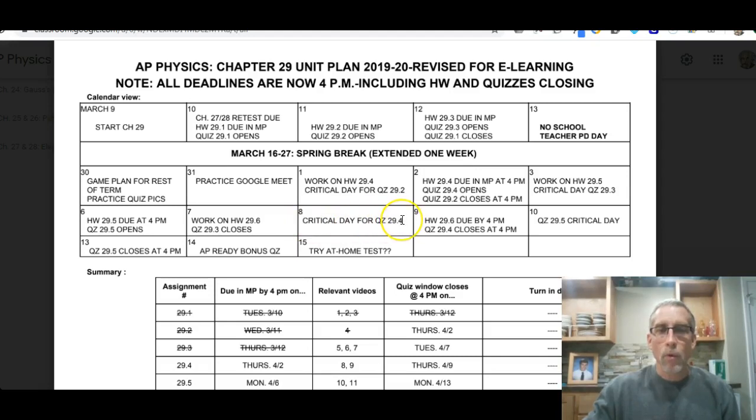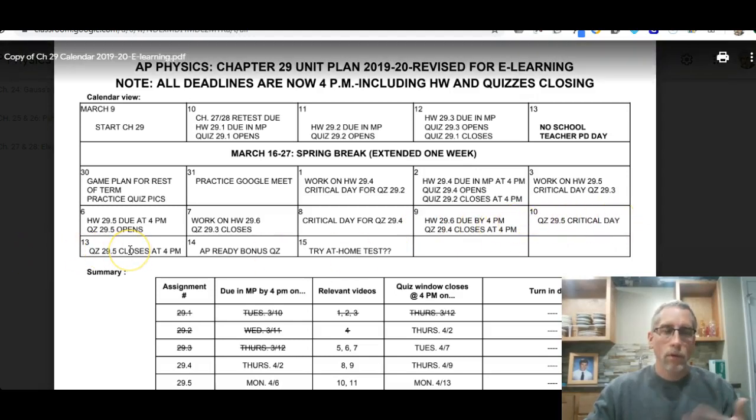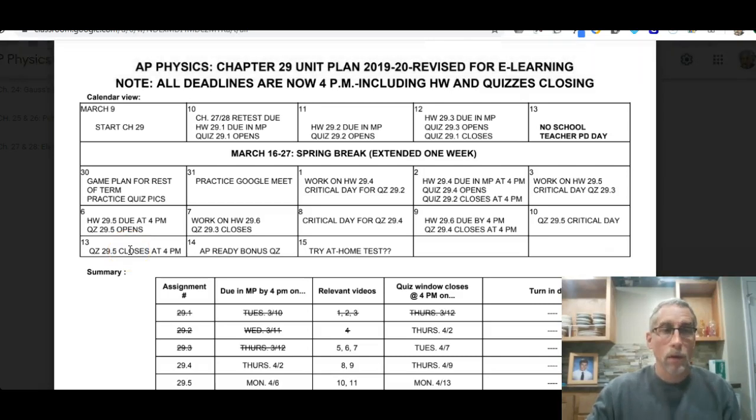29.4 we opened last week and that's critical day is Wednesday. And then we're closing that one on Thursday. And then critical day for quiz 5 is on Friday. So everything feels like it's in slow motion because we're used to doing things three day windows and now it's like five or six day windows.